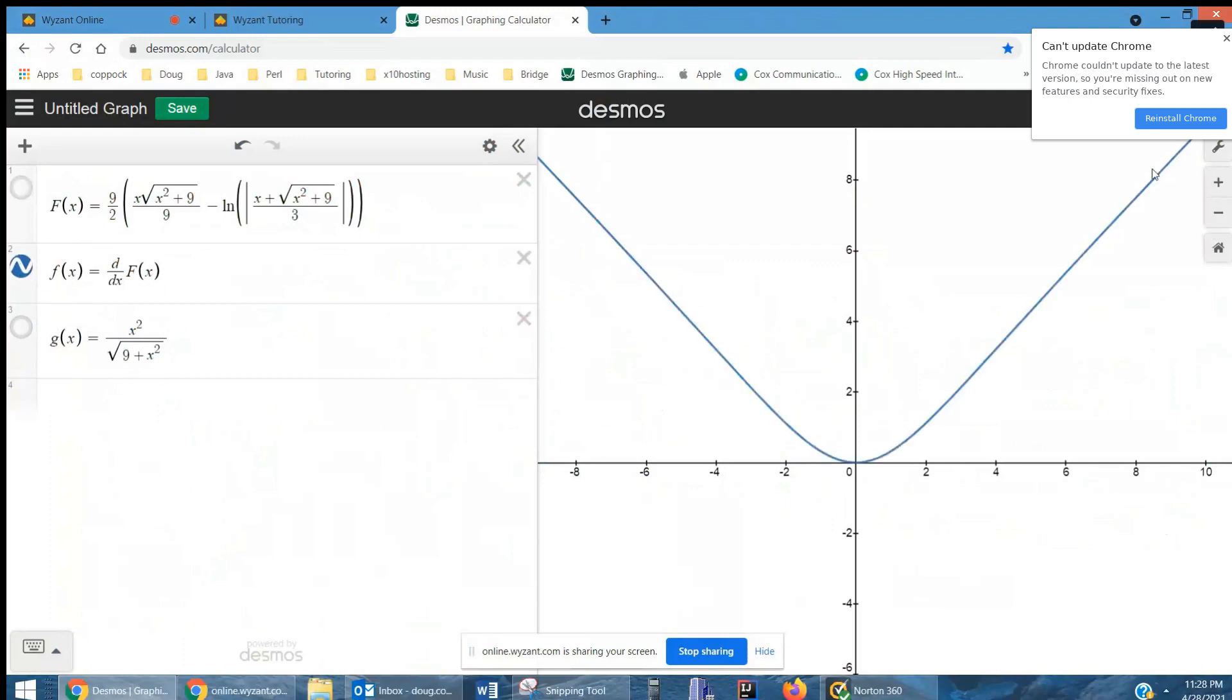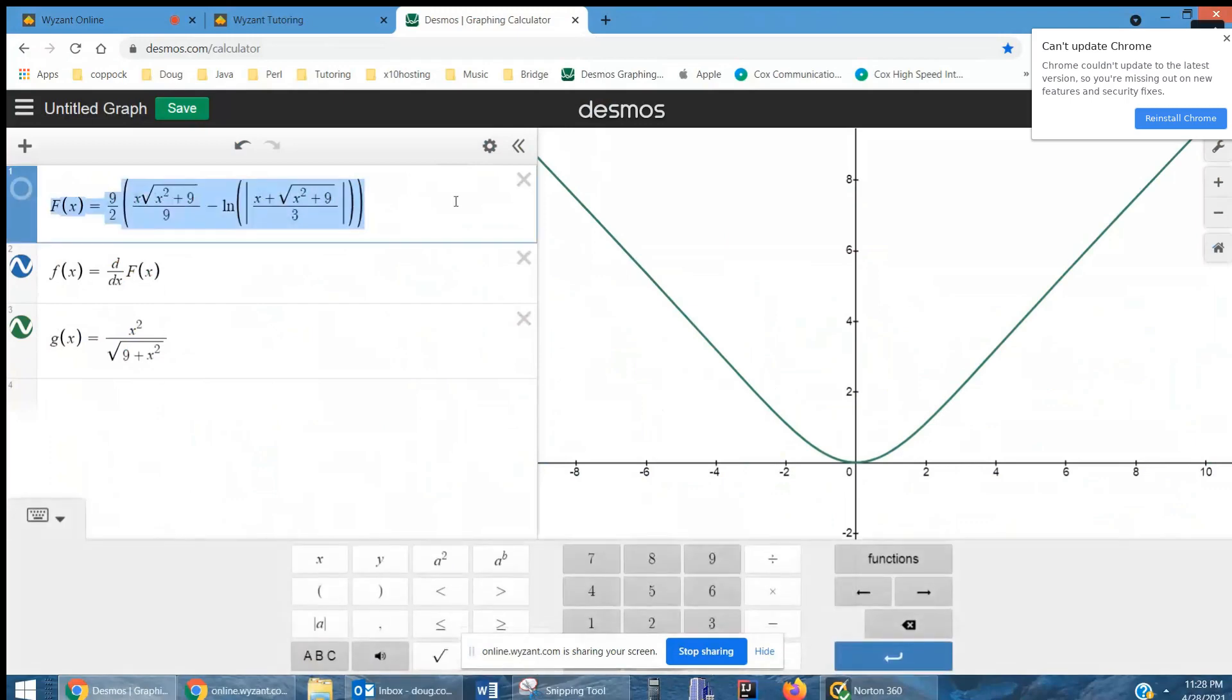There's the graph using the Desmos operator. And there's the graph of g as what was in the original problem. And they overlap each other. So that means that, indeed, this is the answer.